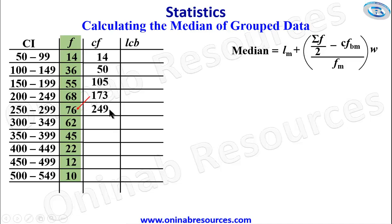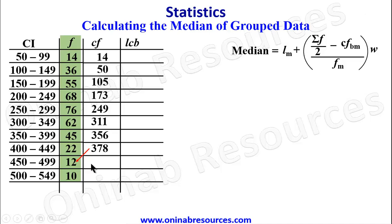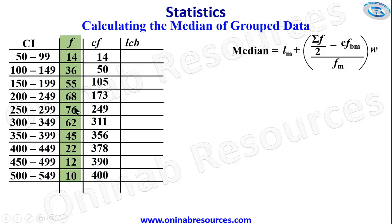Continuing the cumulative frequency: 173 plus 76 gives 249; 249 plus 62 gives 311; 311 plus 45 gives 356; 356 plus 22 gives 378; 378 plus 12 gives 390; and finally 390 plus 10 gives 400. This 400 is the total population of the distribution — the sum of all frequencies.